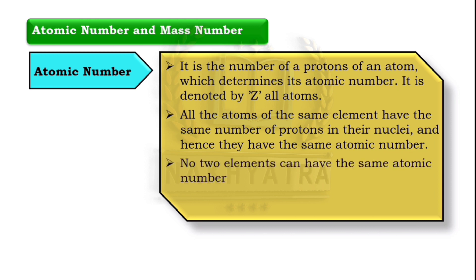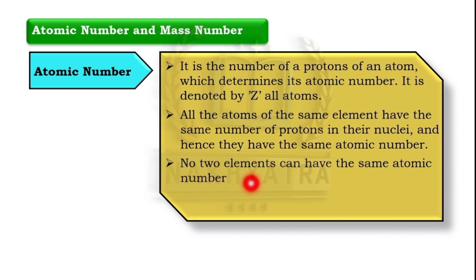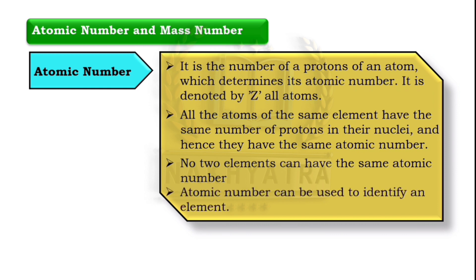No two elements can have the same atomic number — all elements have different atomic numbers. The atomic number can be used to identify an element.